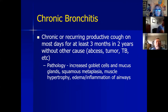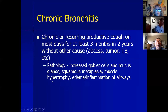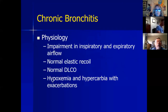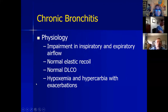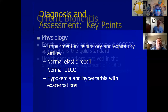Chronic bronchitis is more of a clinical definition — chronic recurrent cough without another identifiable cause. Pathologically, you see increased goblet cells and mucous glands, possible squamous metaplasia, muscle hypertrophy, and airway inflammation. There's impairment of both inspiratory and expiratory airflow, with more normal elastic recoil and diffusing capacity. These patients tend to present with hypercapnia and hypoxemia, and are more classically the 'blue bloaters,' though pathologically the distinction from pink puffer is actually quite difficult.